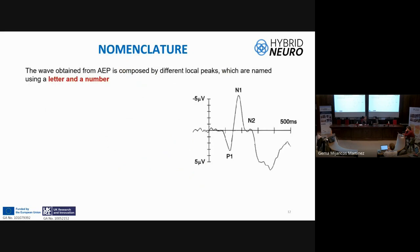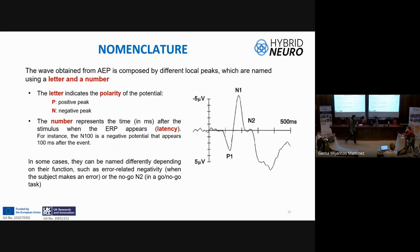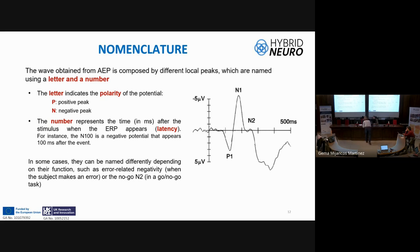Potentials are named based on polarity and latency. They are labeled with P or N depending on polarity — P for positive and N for negative — and a number indicating the latency in milliseconds after the stimulus onset. For example, N100 is a negative peak appearing 100 milliseconds after the stimulus. Note that in the image the axes are inverted, so negative is up and positive is down. Some potentials have particular names related to cognitive tasks, such as error-related negativity or potentials in no-go and go/no-go tasks.